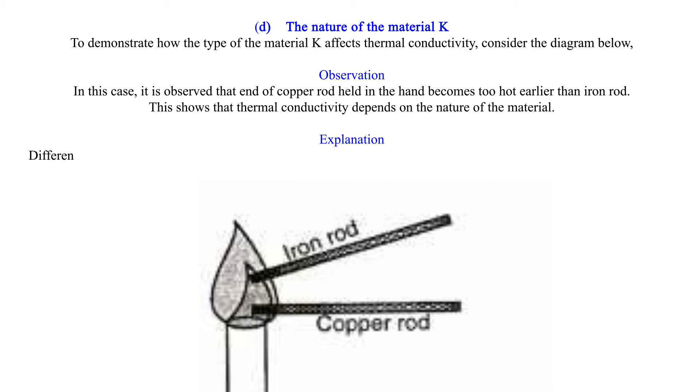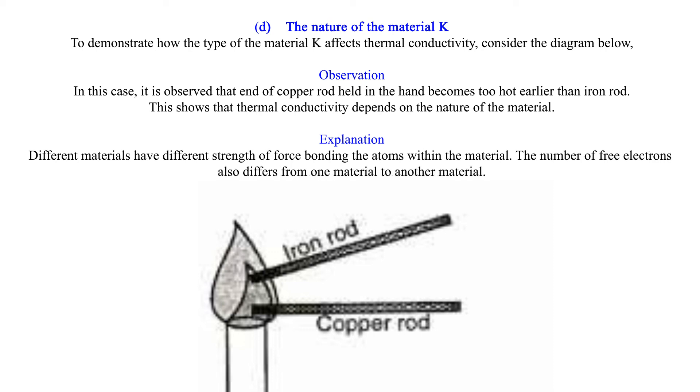Explanation: Different materials have different strength of force bonding the atoms within the material. The number of free electrons also differs from one material to another material. Materials with many free electrons are better conductors of heat, e.g., copper has more free electrons than iron.